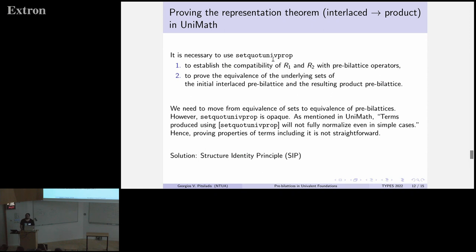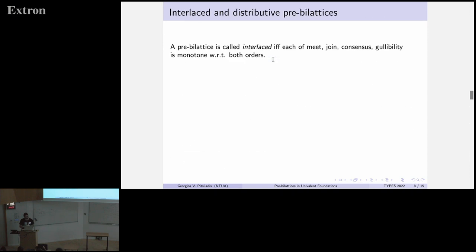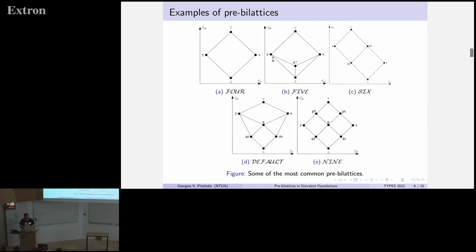Could you say why you're interested in biolattices or what they're used for? Yes, they are usually used in knowledge representation and artificial intelligence and that kind of thing. The first one to be defined was the four, where you have four truth values: true, false, both true and false, neither true nor false. And you model stuff like there are many sources of information for one proposition. So the one may say truth, the other may say false, so what do you do then? And it has evolved from that.